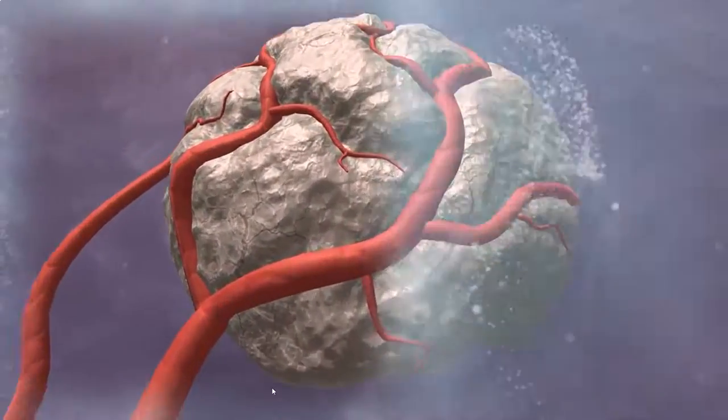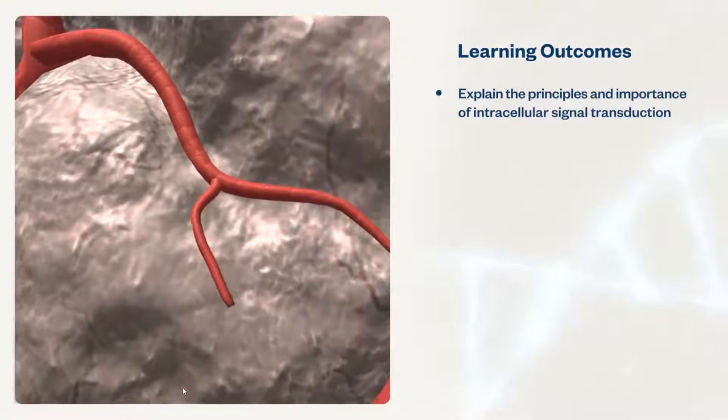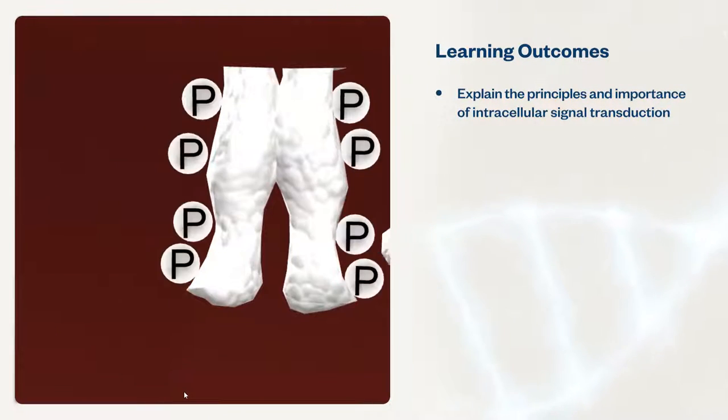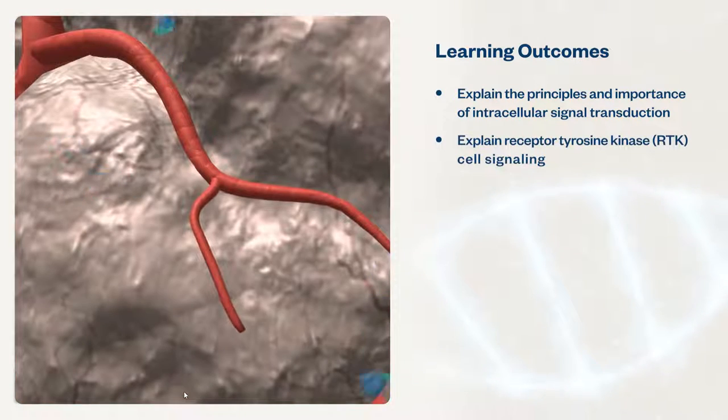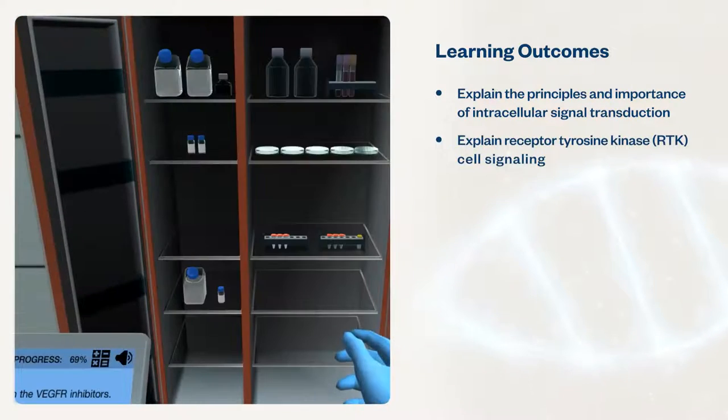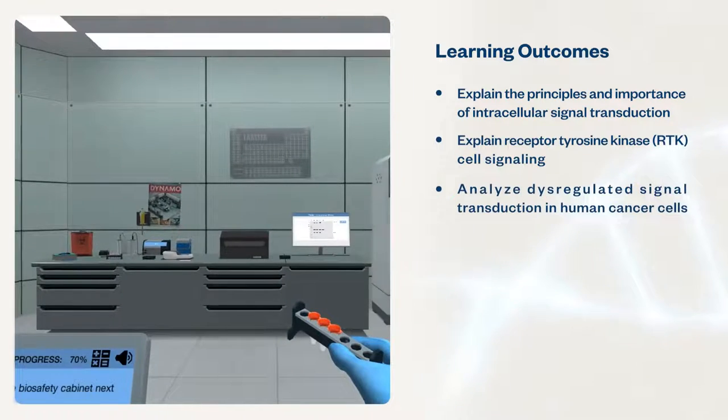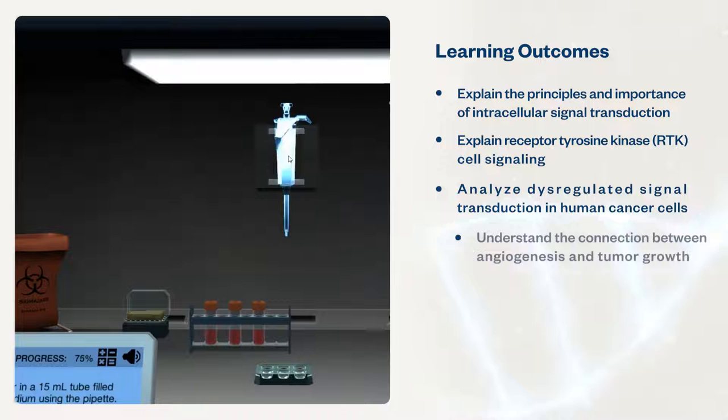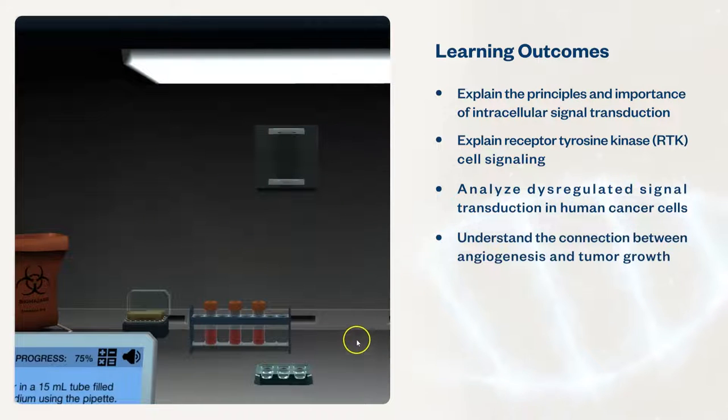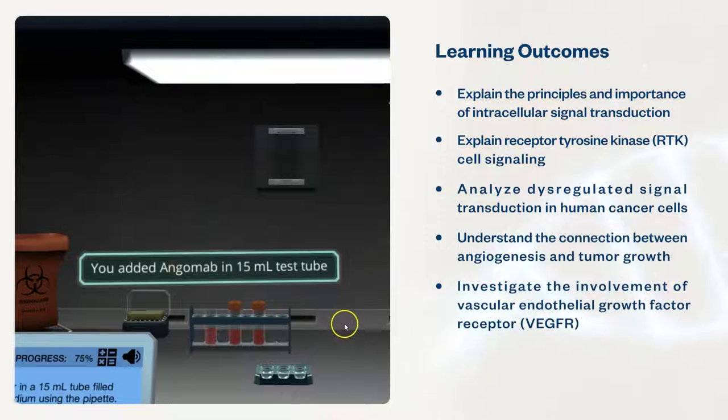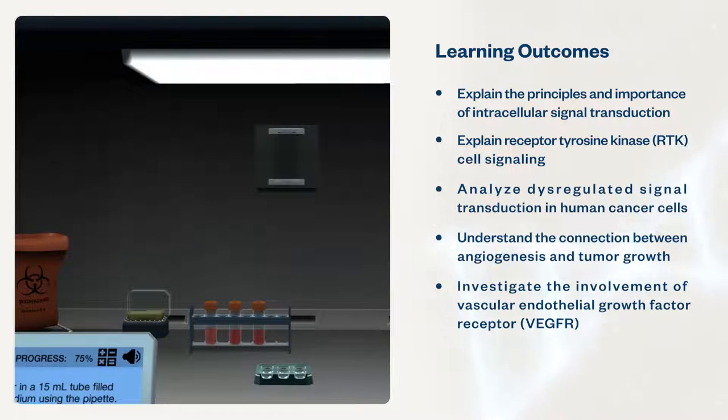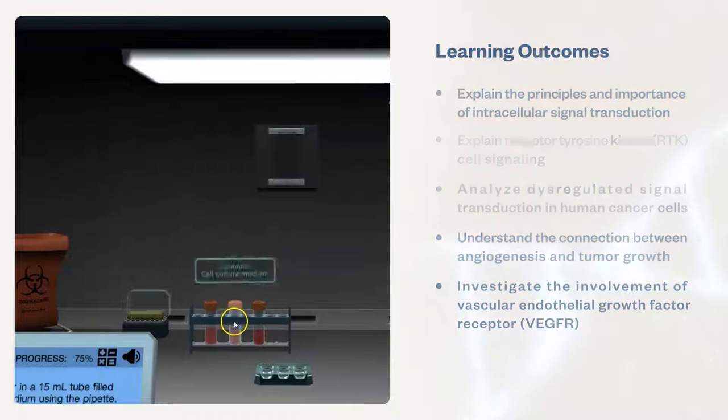These simulations will help students explain the principles and importance of intracellular signal transduction, explain receptor tyrosine kinase (RTK) cell signaling, analyze dysregulated signal transduction in human cancer cells, understand the connection between angiogenesis and tumor growth, and investigate the involvement of vascular endothelial growth factor receptor (VEGFR) signaling in human breast cancer.